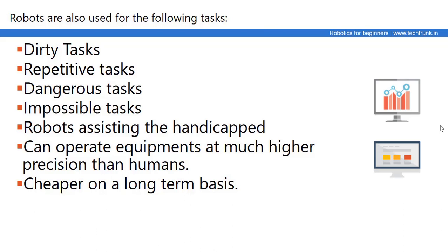For dangerous tasks, where the environment is not suitable for humans — such as mining, lime industry, or industrial environments with extreme temperature and pressure where humans cannot survive — robots are much better suited to perform those tasks, including monitoring, maintenance, and process control. Robots are also used for assisting handicapped people, elderly people, or patients, and can operate equipment with higher precision than humans.